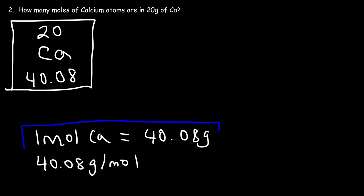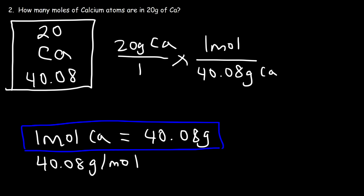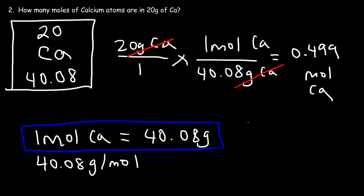This is our conversion factor. Starting with 20 grams of calcium, since we have grams of calcium on the top left, we need to put it on the bottom right — 40.08 grams of calcium on the bottom right, and one mole of calcium on top. The unit grams of calcium cancels. So it's 20 divided by 40.08, which equals 0.499 moles of calcium.